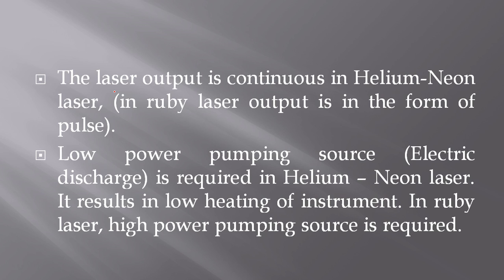The first reason is the laser output is continuous in Helium Neon laser. But in Ruby laser, the output is in the form of pulse. That is, the output is discontinuous.